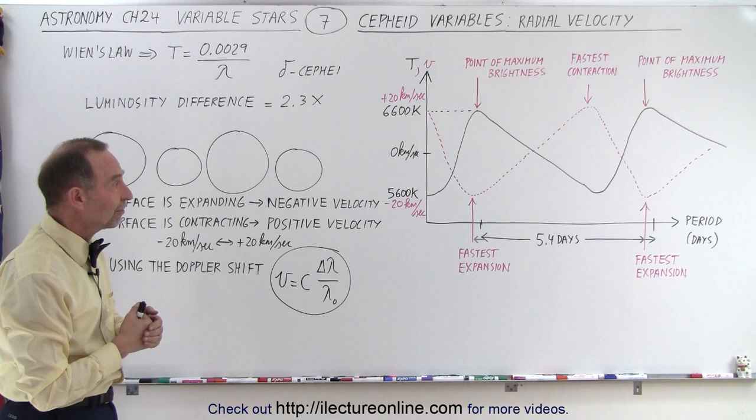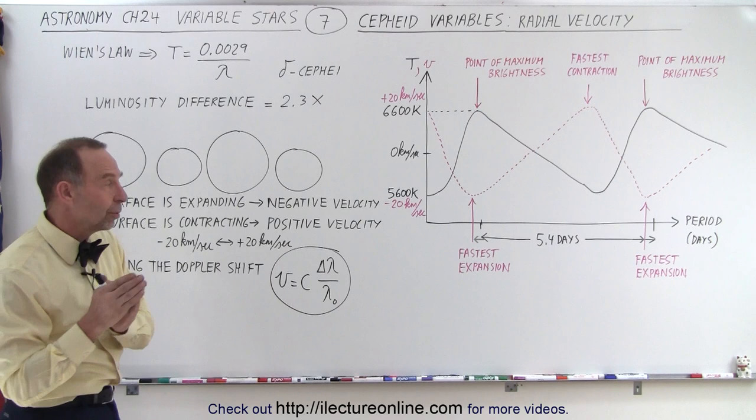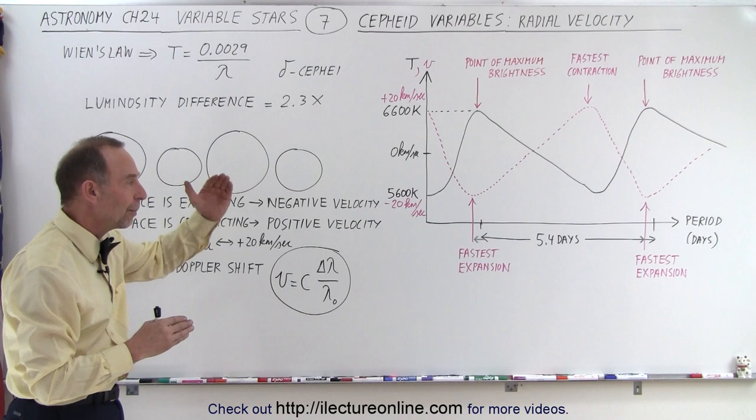So an interesting type of star, the Cepheid variable. And again, the key to all that is, it's nice to understand all this, it's very interesting, but the key and the usefulness of that star is that the periodicity has a linear relationship to its absolute brightness.